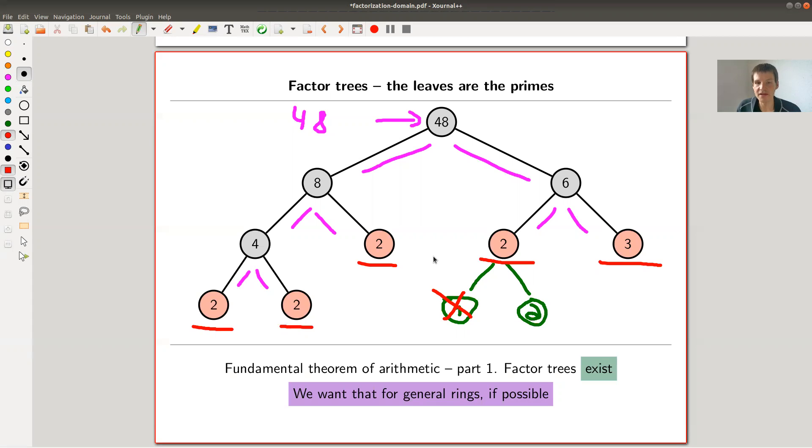And the point is, fundamental theorem of arithmetic tells you factor trees exist, which part one tells you factor trees exist, which just is saying that you can factor a number into its prime factors. And the main idea that I would like to discuss today is we want a generalization of this.